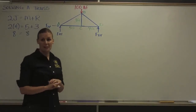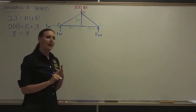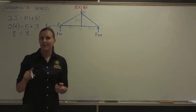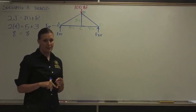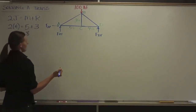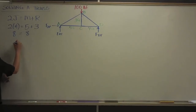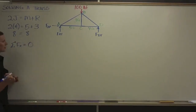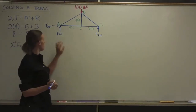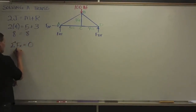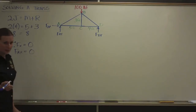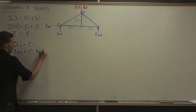Let's go ahead and start with the external reaction forces. There are 3 formulas: the sum of forces in X, the sum of forces in Y, and the sum of moments must all total to zero. Beginning with the sum of forces in the X-direction, the only force in X is F-A-X, so F-A-X equals zero.